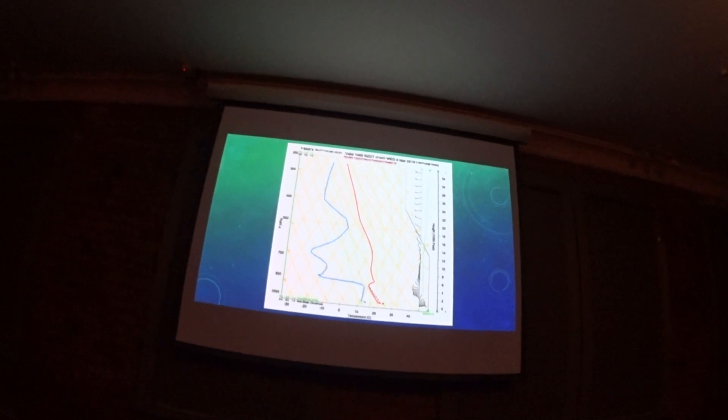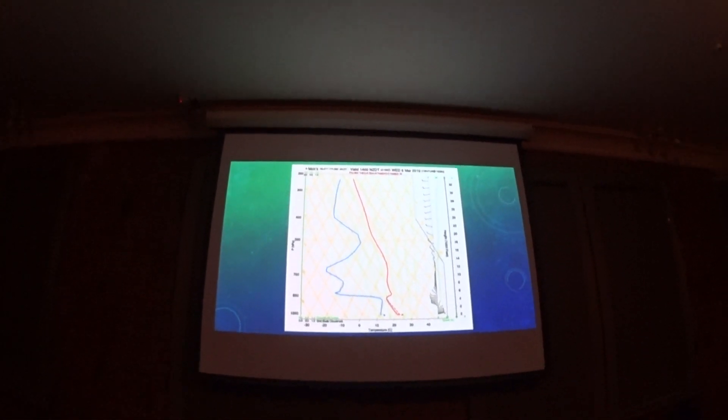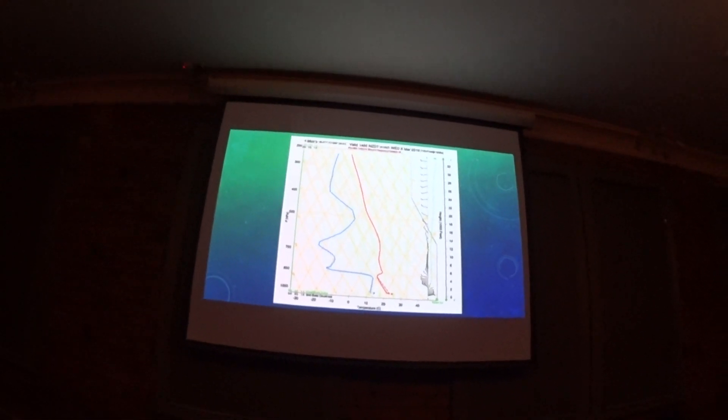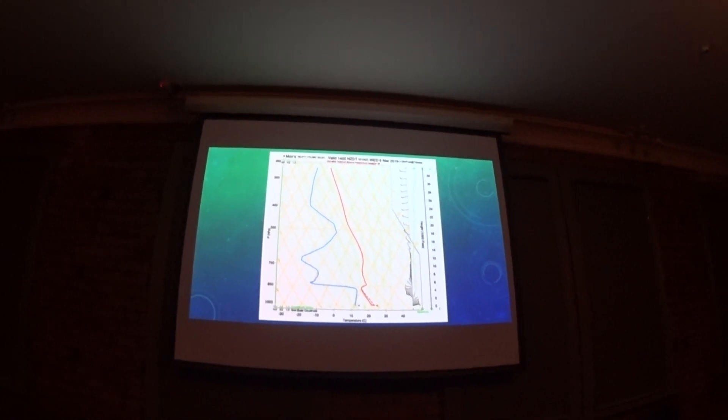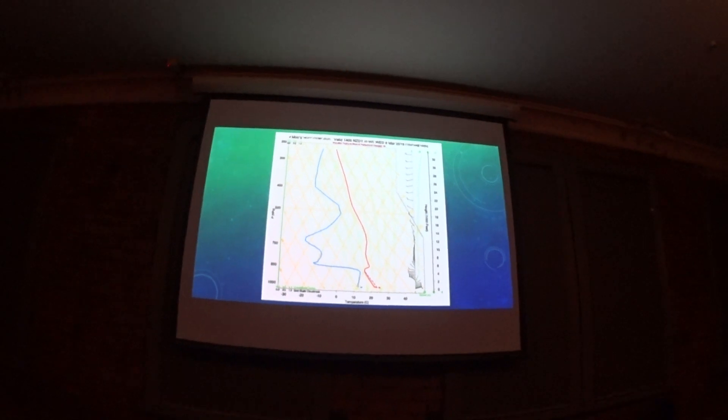Earlier you made the comment when we were talking about convergence that one's going to slide over the other. Is that what we see in the skew-T as the wind climbs with altitude? Do we see it on the west or east side over the top? Not necessarily. You get a shear zone.